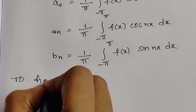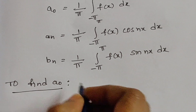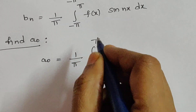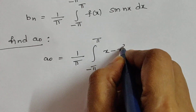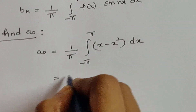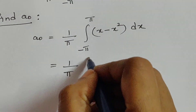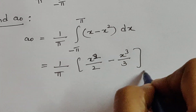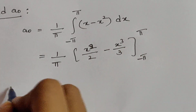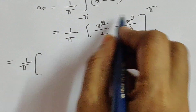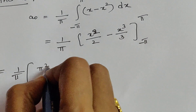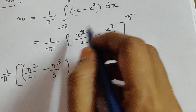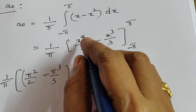To find a naught: a naught equal to 1 by pi integral from minus pi to pi of f of x, that is x minus x square, dx. It is equal to 1 by pi times x square by 2 minus x cube by 3, with limits from minus pi to pi. Substituting the limits — in place of x, upper limit pi: pi square by 2 minus pi cube by 3, minus the lower limit substitution. In place of x minus pi: minus pi whole square, that is pi square by 2.